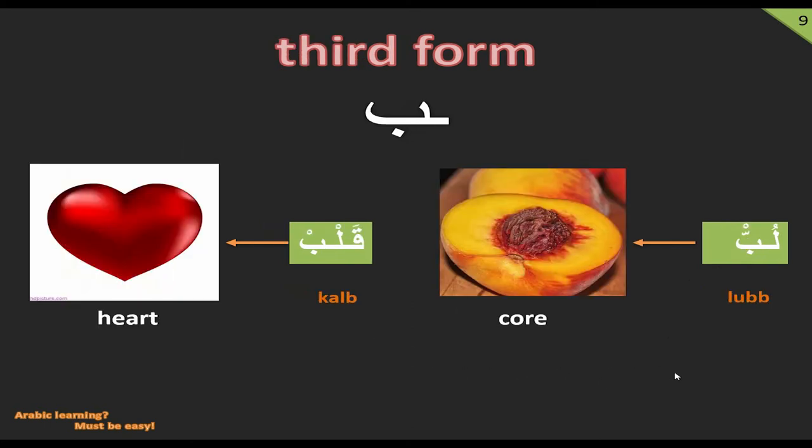On the next slide, we have two examples of the third form of Ba. Namely, Lubb means core. And in the second example, Qalb means heart. That was all about the second letter Ba.